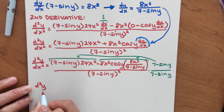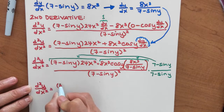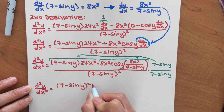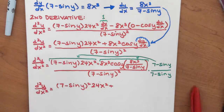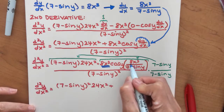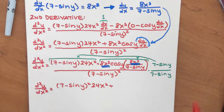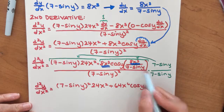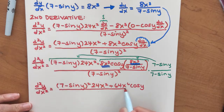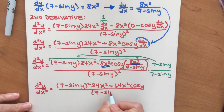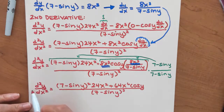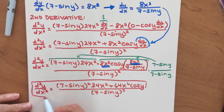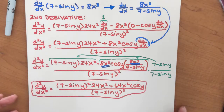Lastly, my second derivative is going to be 7 minus sine y squared times 24x squared, plus — I'm going to combine my 8x cubed, multiply those together — that gives me 64x to the 6th cosine y. And then of course the 7 minus sine y terms cancel, over my denominator 7 minus sine y cubed. Because when I multiply those two together, I add the exponents, and that's where the cubed comes from. And there we have the second derivative found using implicit differentiation, which we used because you could not solve for y in this equation.